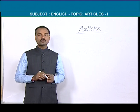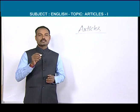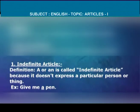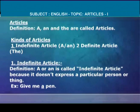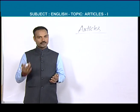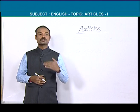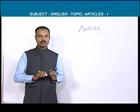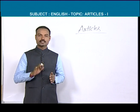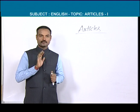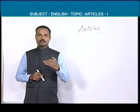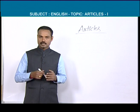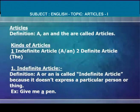Now let us learn the definitions of articles. First, indefinite article: A or AN is called indefinite article because it does not express a particular person or thing. THE is called definite article because it expresses a particular person or thing. When we use either A or AN in any sentence, that sentence cannot give us a definite meaning — that is why it is called indefinite article.